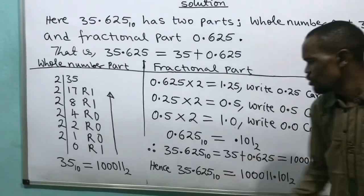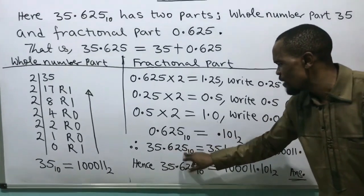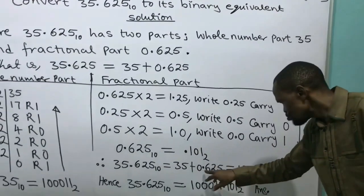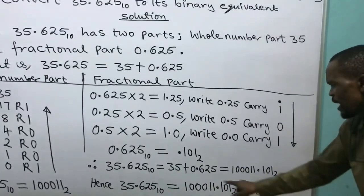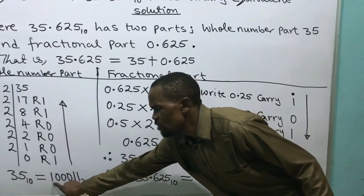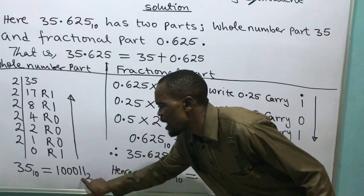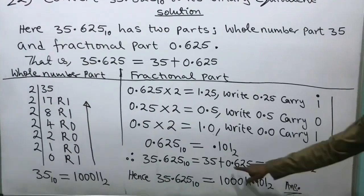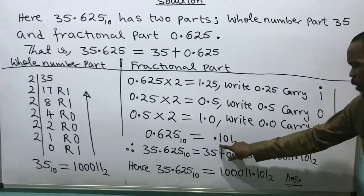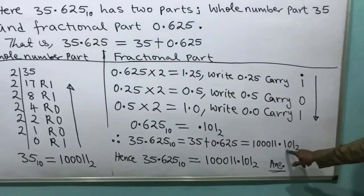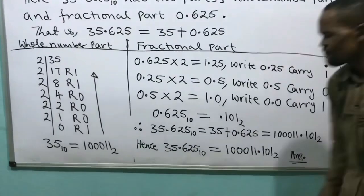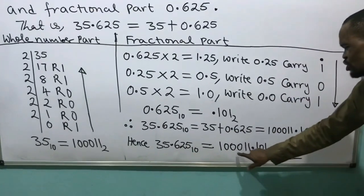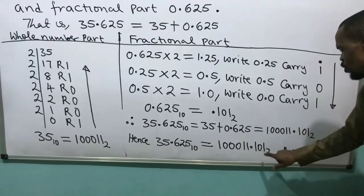Let's see the full calculation. 35.625 base 10 has a whole number part 35, which equals 100011 base 2, and a fractional part 0.625, which equals .101 base 2. Therefore the answer in full: 35.625 base 10 equals 100011.101 base 2. That is the final answer.